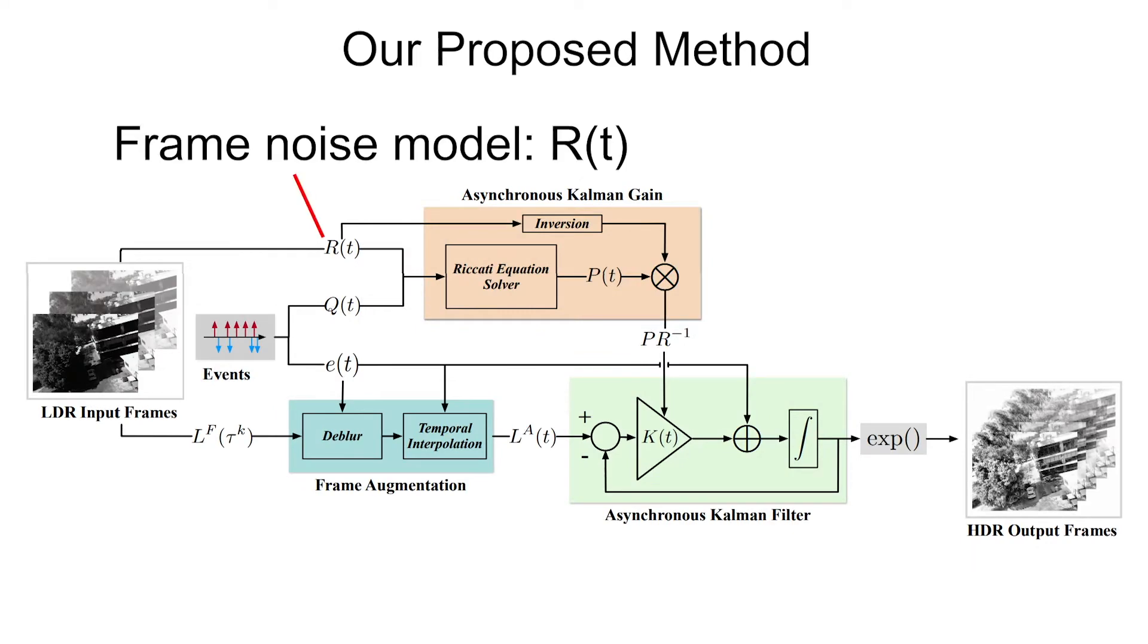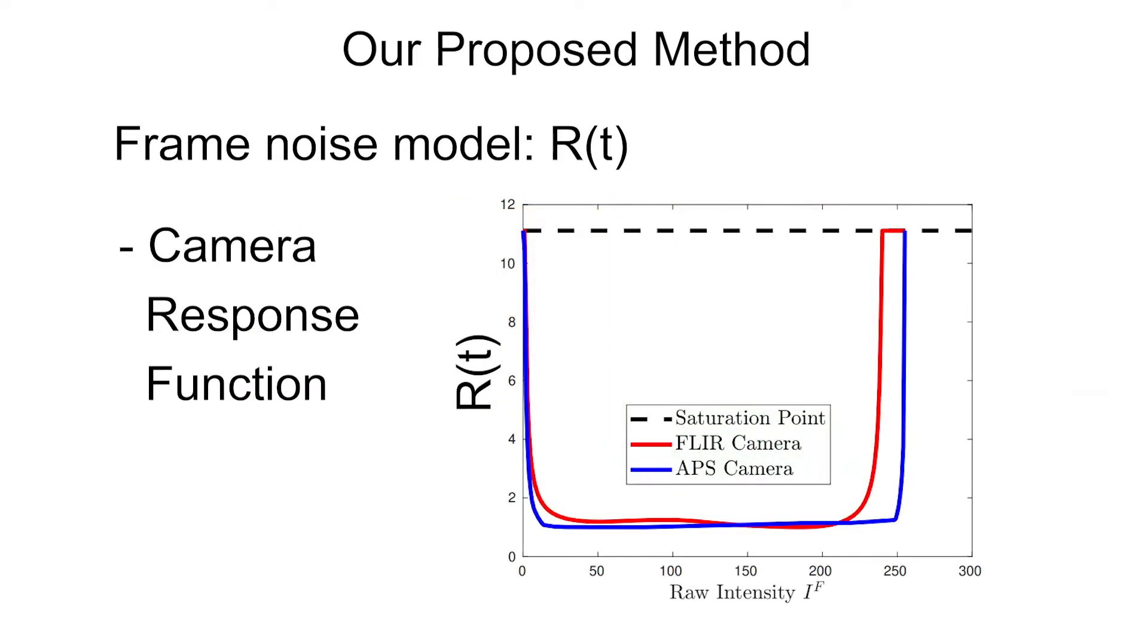The covariance of the frame noise model, R, is based on the camera response function, and increases uncertainty associated with extremes of dynamic range in the image frame, that is, very low and very high intensity values.